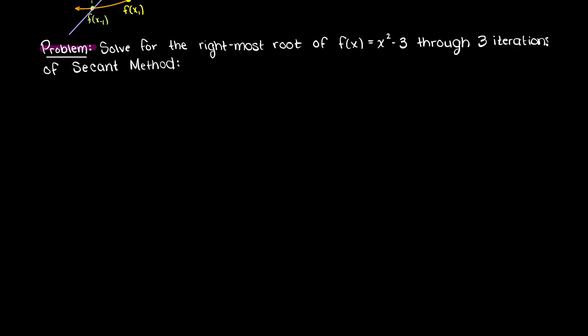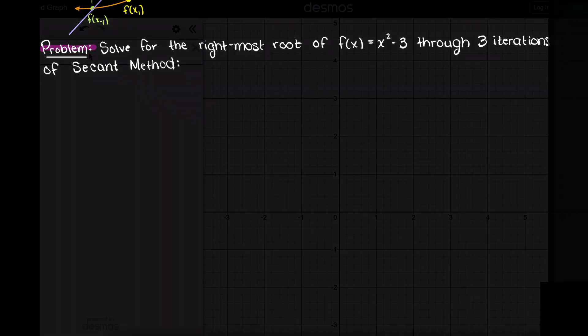The function that we are given is just a parabola that is shifted in the negative y direction three units. As discussed in our previous secant method theory video, our first step is that we must choose two initial x values. This part is pretty arbitrary, however you can plot your function using Desmos and select two points around your root of interest.